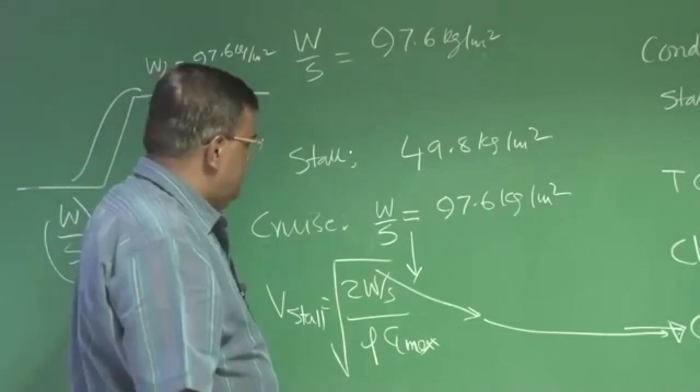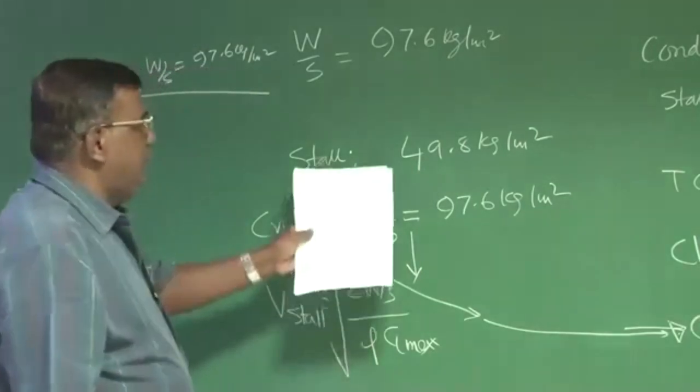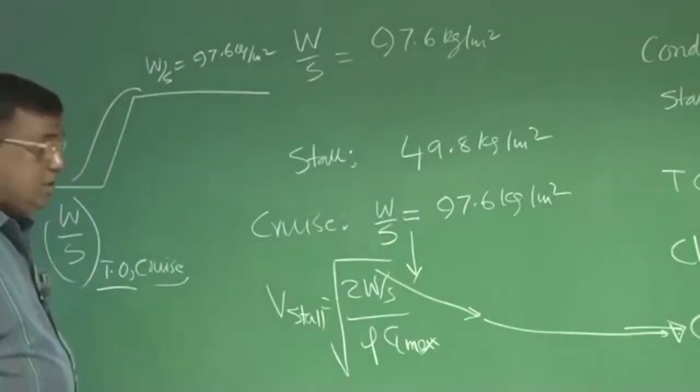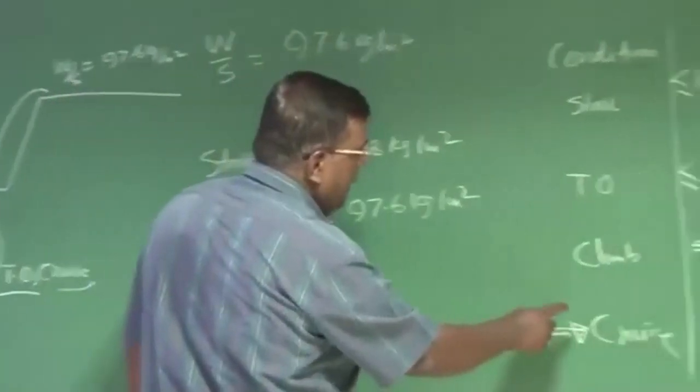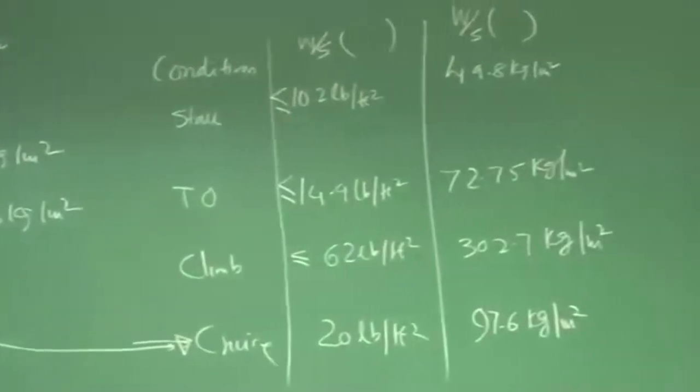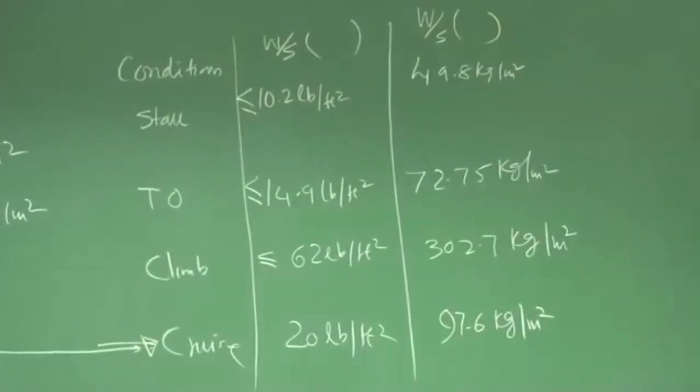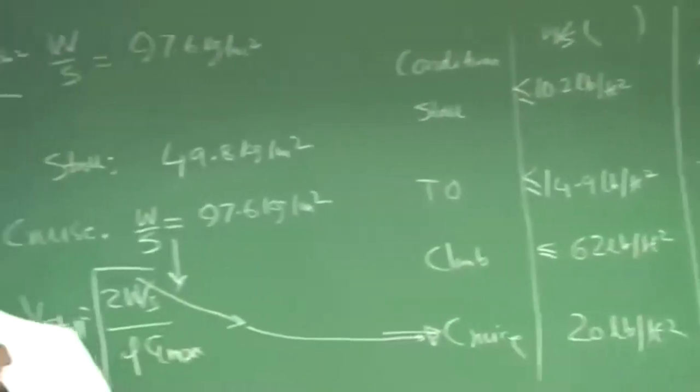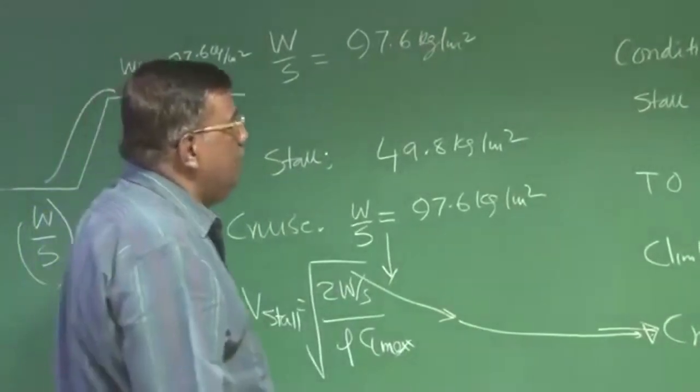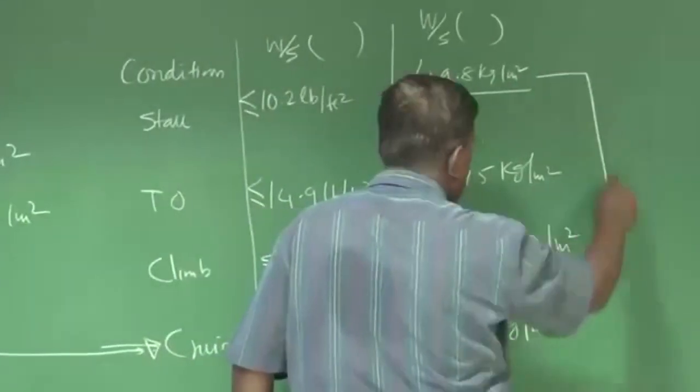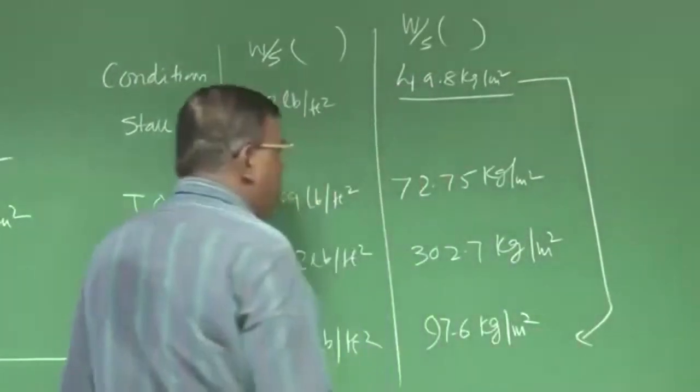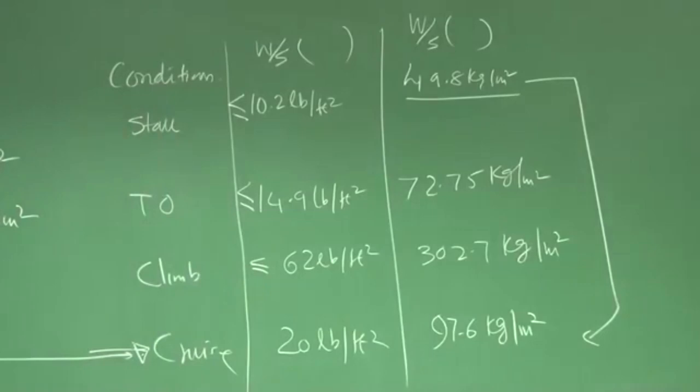V stall I want around 50 knots. So if I take W by S as 97.6 kg per meter square, then naturally your V stall will be more because it varies with W by S. To maintain the V stall, the W by S required was 49.8 or less than that, but we are selecting 97.6.